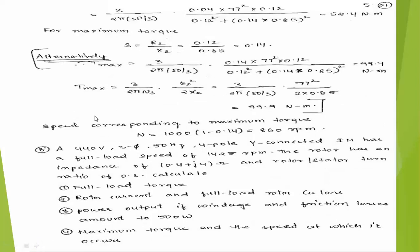Full load torque TF = (3 / 2πNS) × (S × E2² × R2) / (R2² + (S×X2)²). Substituting: S = 0.04, E2 = 77V, R2 = 0.1, X2 = 0.85. So TF = 3 × 0.04 × 77² × 0.1 / (0.1² + (0.04 × 0.85)²) divided by 2πNS. You will get a total torque of 52.4 Newton-meters.